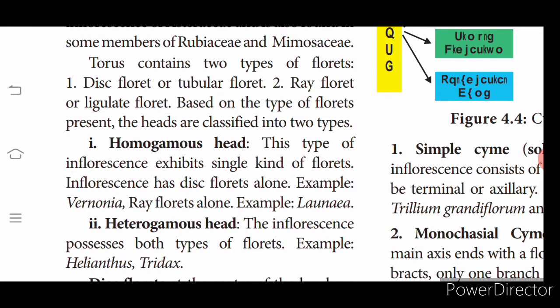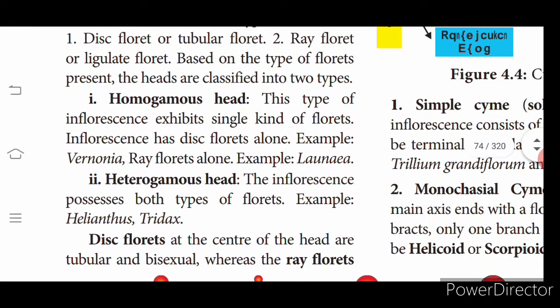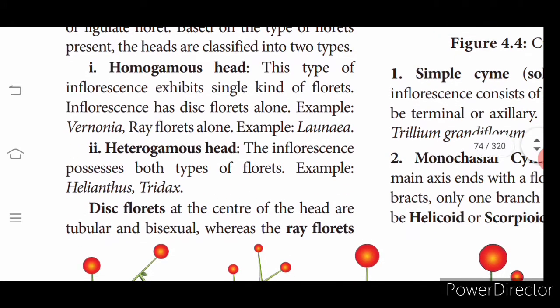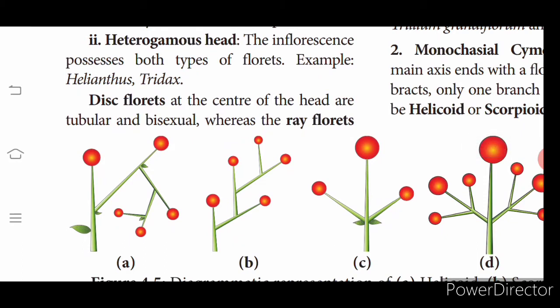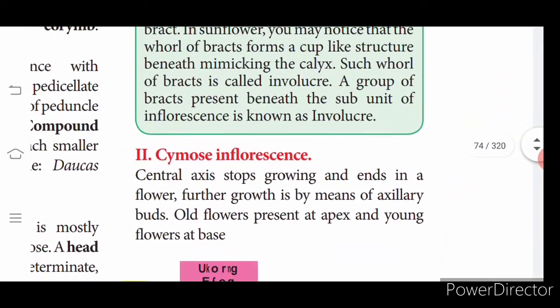Under head inflorescence we have a torus with two types of florets: disc florets and ray florets (also called ligulate florets). If the same type of flowers are present in the capitulum, it is called a homogamous head. If two different types — disc florets and ray florets — are present in one head, it is called a heterogamous head. Disc florets are at the center and ray florets are towards the periphery.